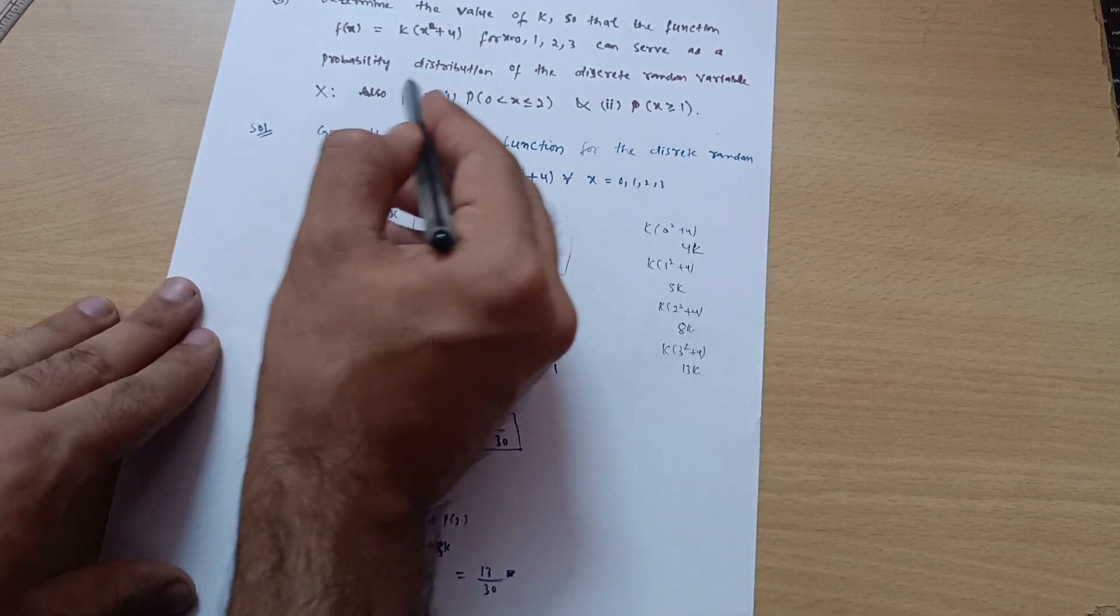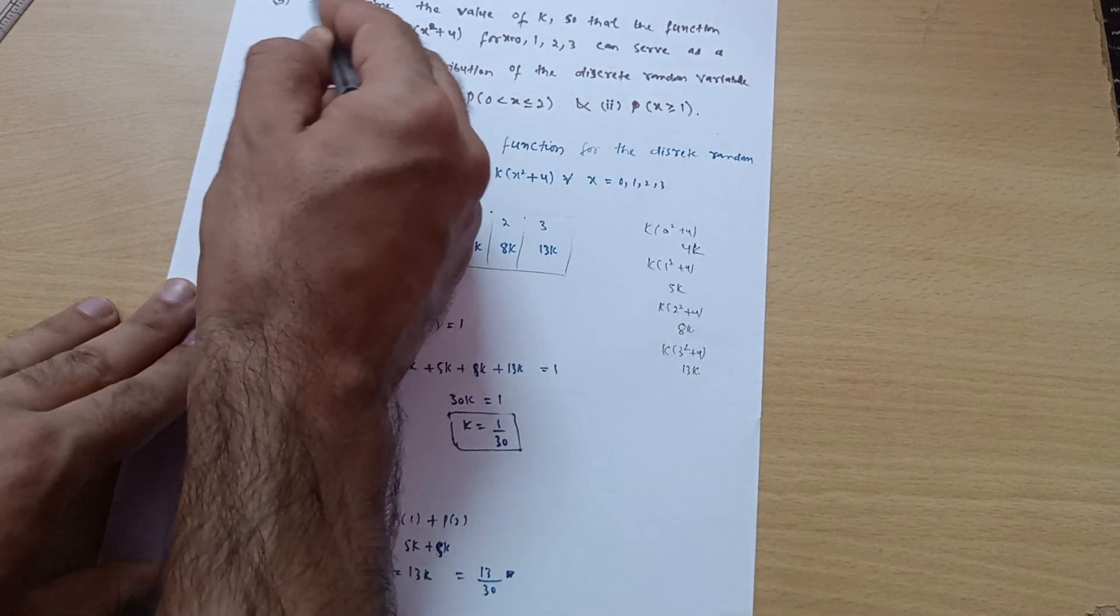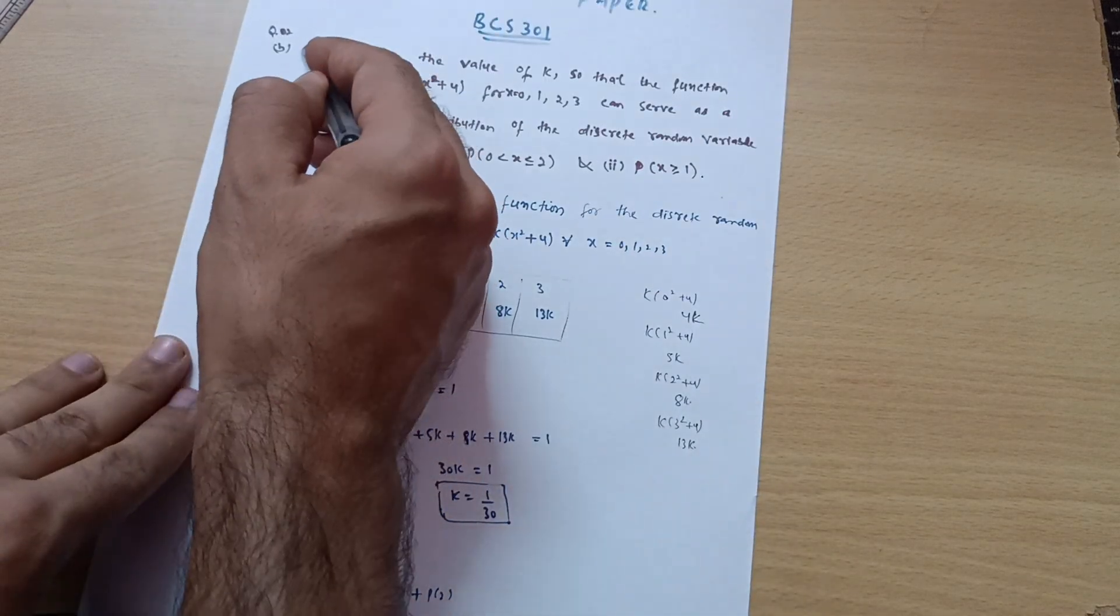This is your first part. Determine the value of k is already over.